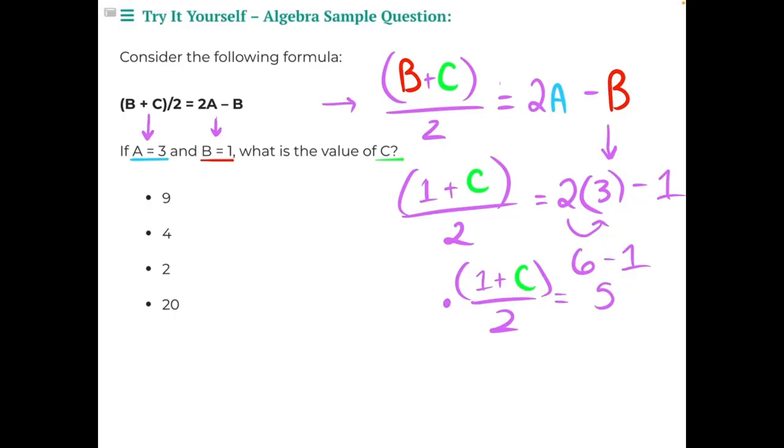So 2 is in the denominator. Let's multiply by a fraction that has a numerator of 2 so that these 2's will cancel each other out. On the other side we would also multiply by 2 over 1, leaving us with just the numerator, 1 plus C.